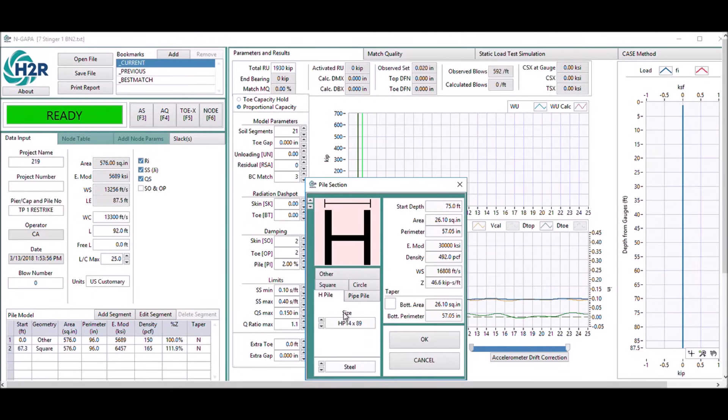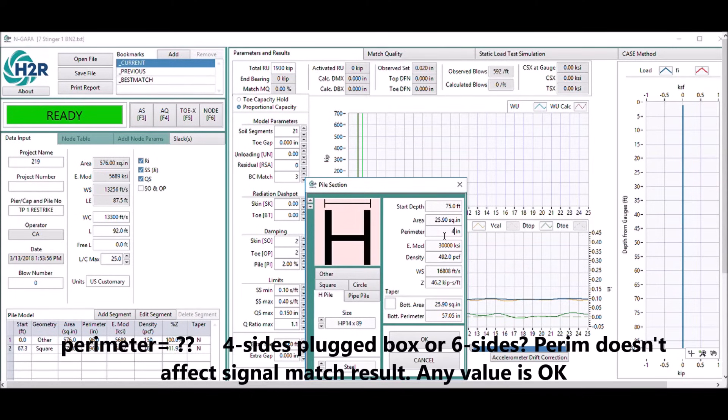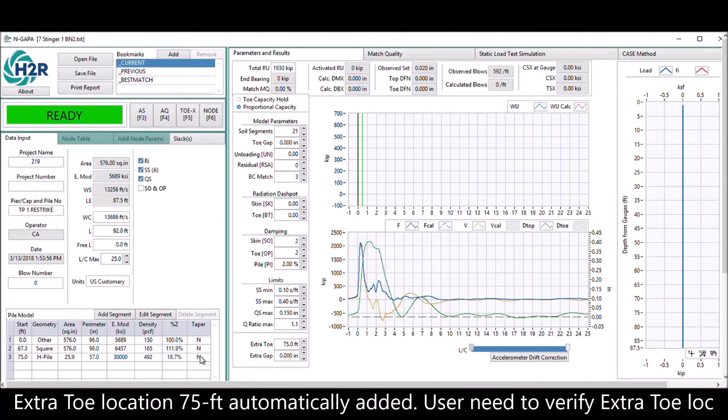Segment 3 is the stinger W-shape. There's no W-shape in this list, so you can just select a similar size H-shape and revise the area. The perimeter is not that important because it's not affecting the signal match results. The program will automatically add the location for the extra tool, but if not, then the user needs to verify it and add the location.